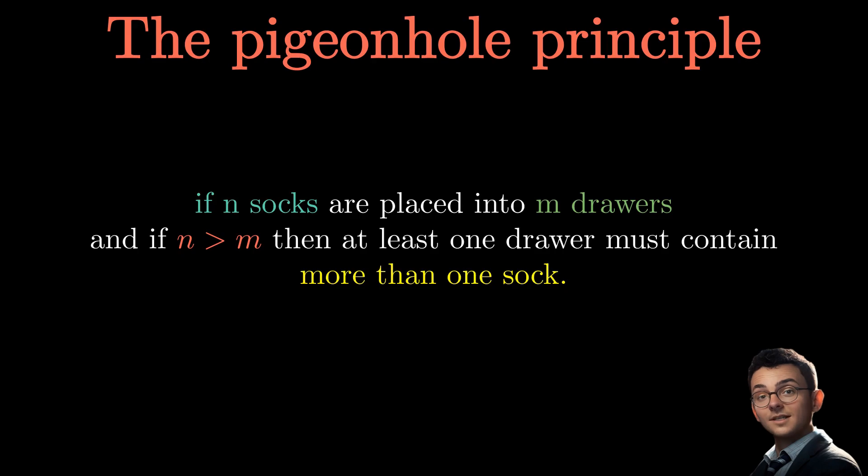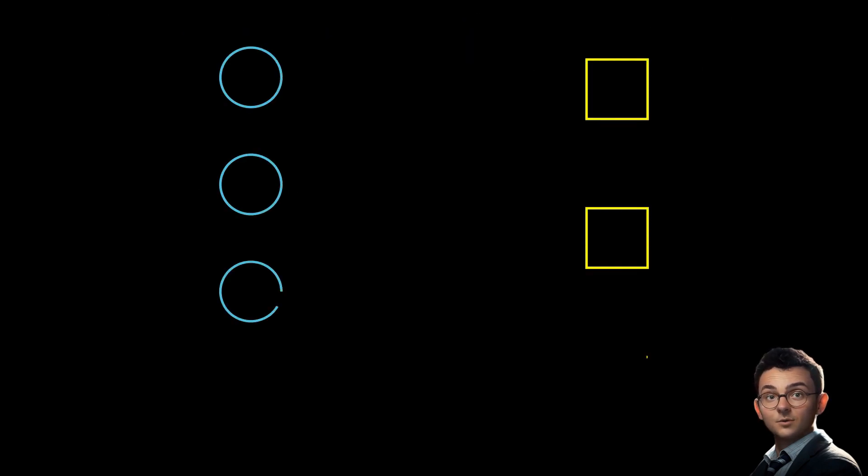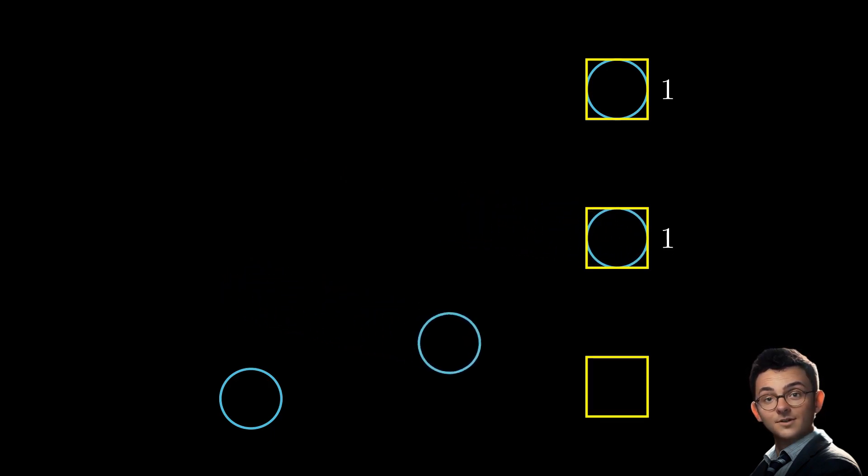We will illustrate the pigeonhole principle with three squares and four circles. The idea is to put the circles in the squares. We will place the first circle in the first square, the second circle in the second square, etc. As for the fourth circle, it will necessarily be placed in one of the old squares already containing a circle.